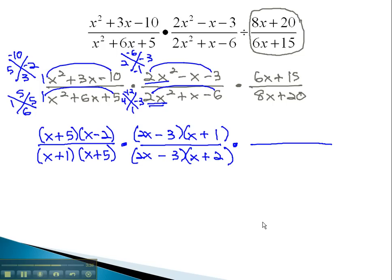For our last fraction, all we can do is divide out the greatest common factor. Here, it's just 3 in the numerator, leaving us with 2x plus 5. In the denominator, the greatest common factor is 4, leaving us with 2x plus 5.